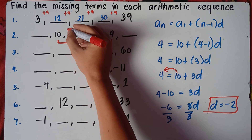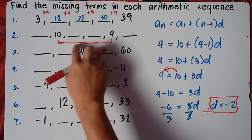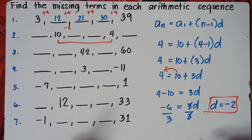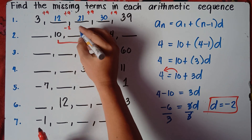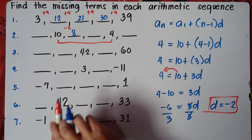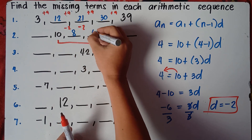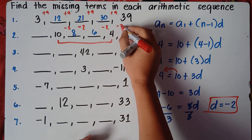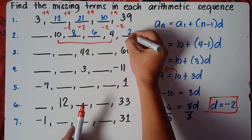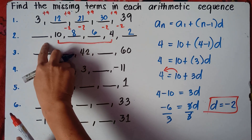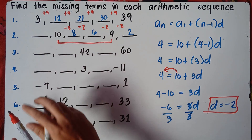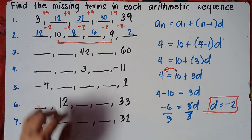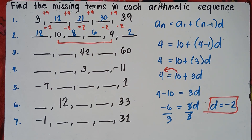So 10 minus 2 is 8, 8 minus 2 is 6, 6 minus 2 is 4, and 4 minus 2 is positive 2. Therefore, the first term — before 10 — is 12, because 12 minus 2 is 10. So the full sequence is 12, 10, 8, 6, 4, 2. We're done with number 2.